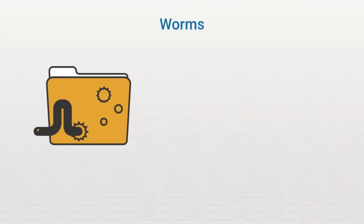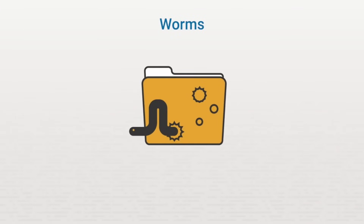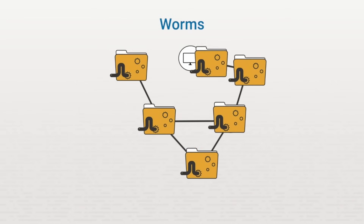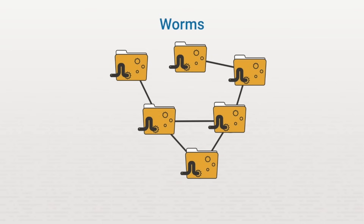Now let's talk about another type of malware called worms. A worm is a type of malicious software that travels across computer networks, automatically replicating itself. Unlike a virus, a worm can propagate itself without a file. Worms are cause for concern because they can spread throughout the internet to millions of unprotected computers very rapidly. In order to do this, worms usually take advantage of unpatched vulnerabilities in computer systems. So to avoid a worm infection, you need to make sure that your systems have been patched and have anti-malware software installed.